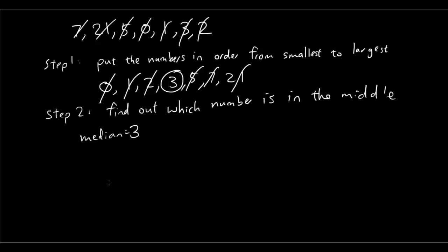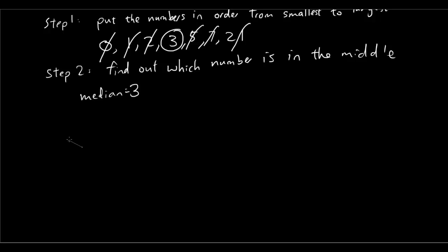Okay, now in another situation, what if I had two numbers in the middle? So for example, I am going to put in the same data set as before, but now I am going to add another piece of data. And now let's see which number is in the middle. So let's cross out one number at a time. And now we have two numbers that are in the middle.